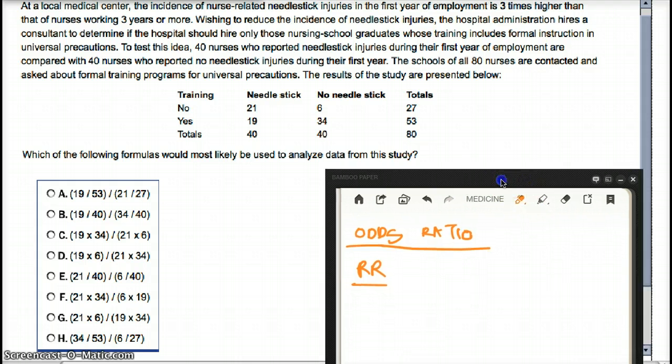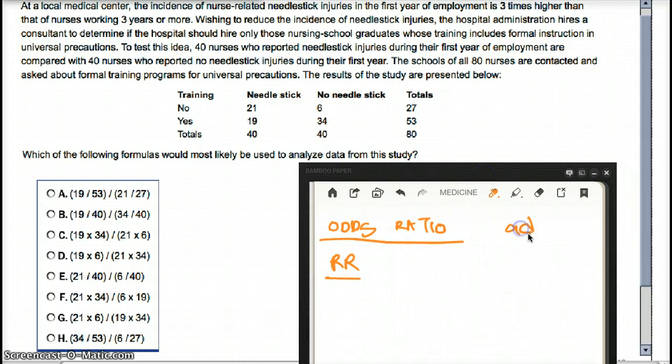Finding odds ratio is not that difficult now. It's A times D divided by C times B. So A would be 21 times 34 divided by C is going to be 19 times 6. So does that match any of our values? Yes, it does. With choice F. So that would be the right answer.